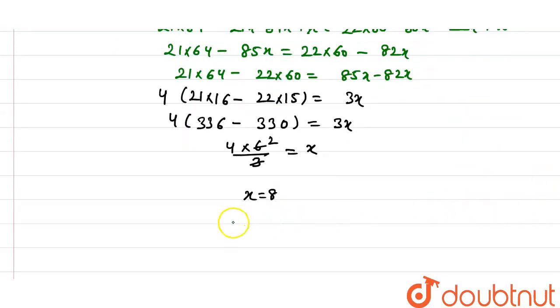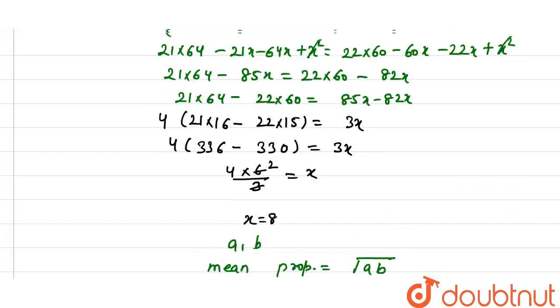The mean proportion of a and b is equal to the square root of a times b.